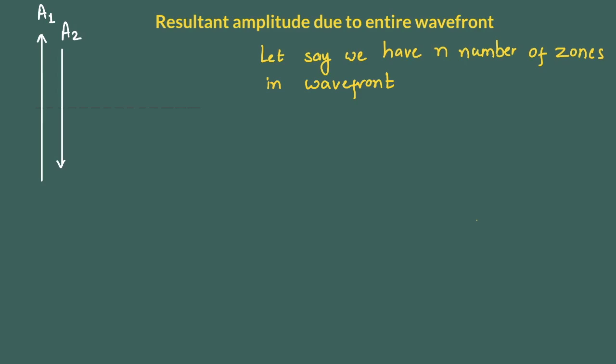Similarly a3 will be again out of phase but will be in phase with a1. Now also as we are going towards higher number of zones obliquity factor is increasing which is reducing the amplitude of the zone. This is exaggerated diagram. In practice the number of zones is really very large and the amplitude very gradually decrease as the number of zones increases.